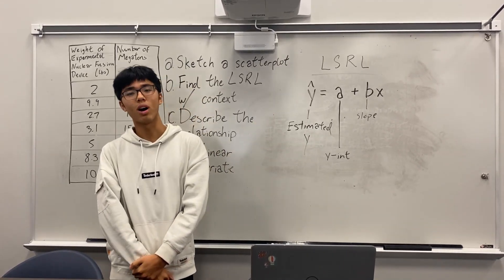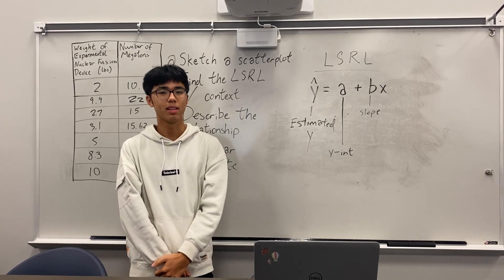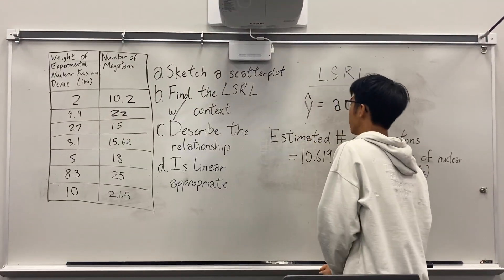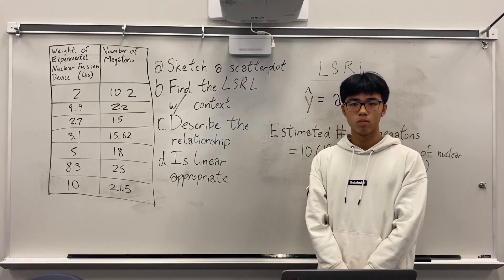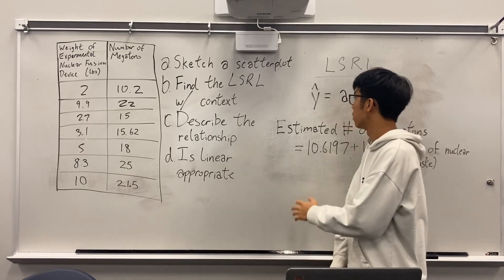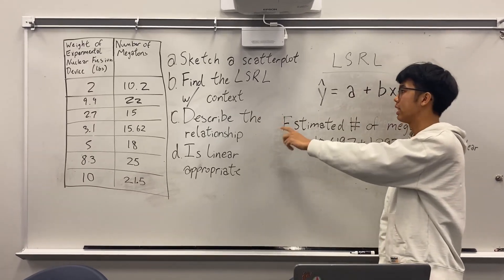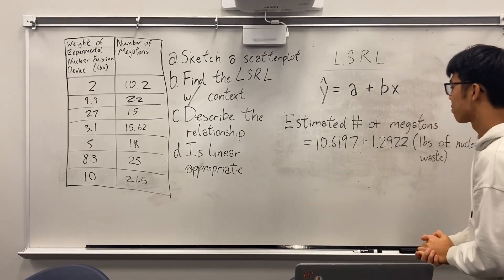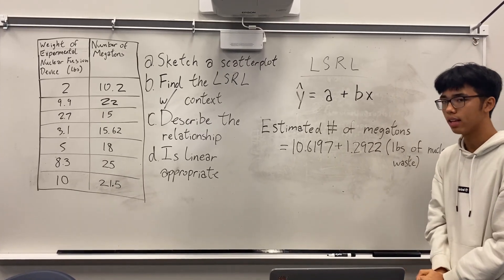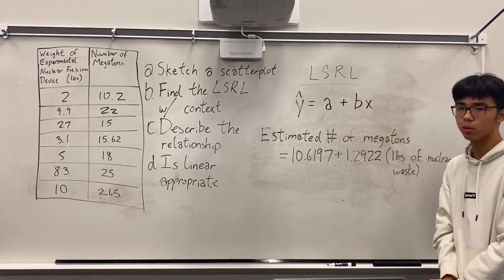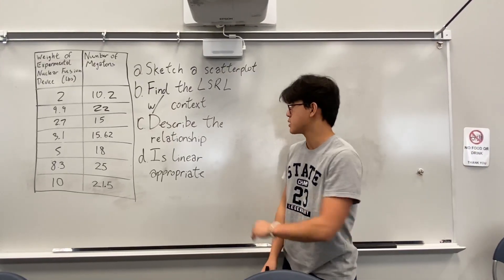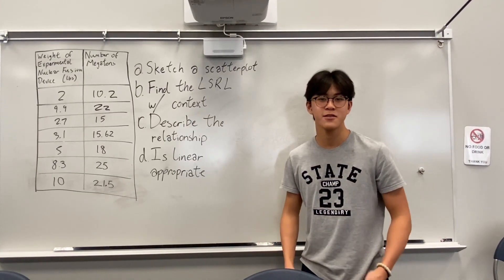Y-hat means estimated y. A is the y-intercept and b is the slope. Letter B asks to find the LSRL with context. For LSRL, you plug the values we got earlier into this equation, and you should get: estimated number of megatons as your y-hat equals 10.6197 as your a, plus 1.2922 as your b, and x is pounds of nuclear waste.